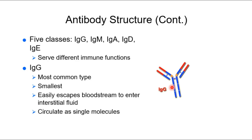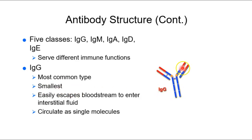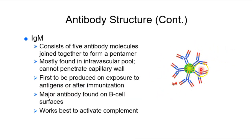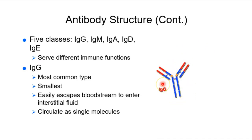IgG is your most common antibody. It has the classic Y-shaped protein structure with a variable region at the top that changes to adhere to one antigen versus another. It's a small, single unit — a monomer. Because it's small, it can escape the bloodstream and go into the interstitium to participate in inflammatory events there. IgG circulates as single molecules.